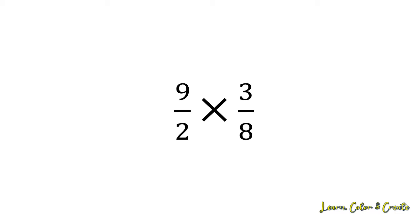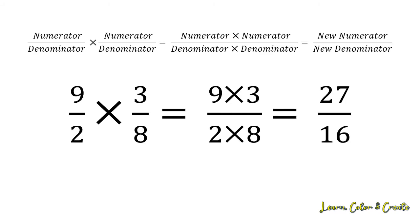Let's look at a third example. If I have 9 halves multiplied by 3 eighths, I'm going to multiply the numerators 9 times 3 to get a new numerator of 27, and multiply the denominators 2 times 8 to get a new denominator of 16. That will give me a final answer of 27 divided by 16.